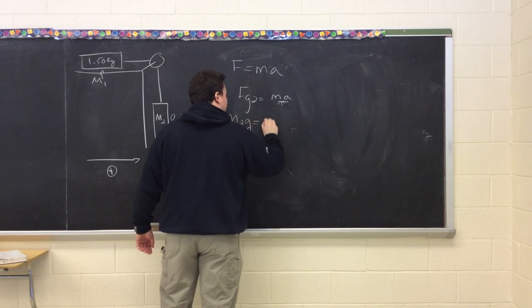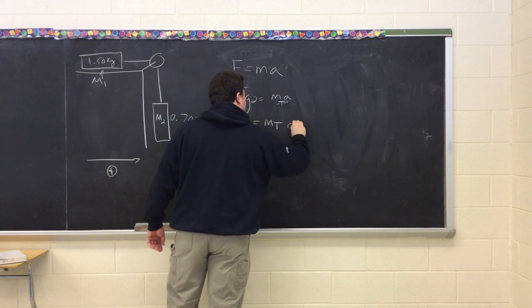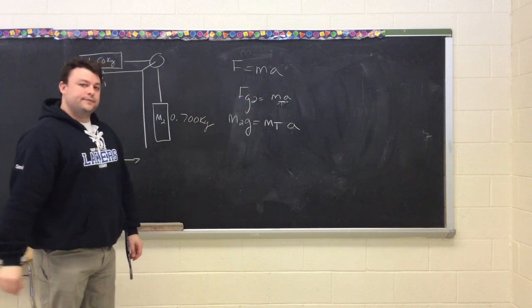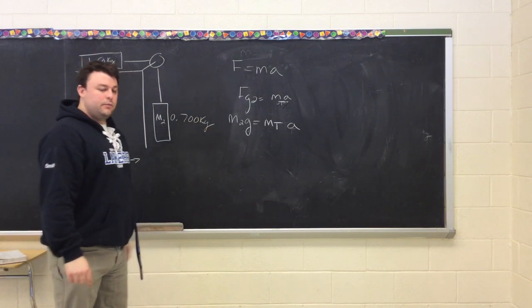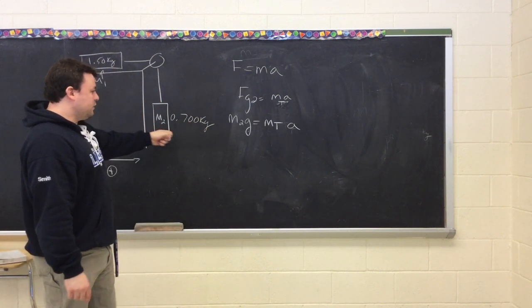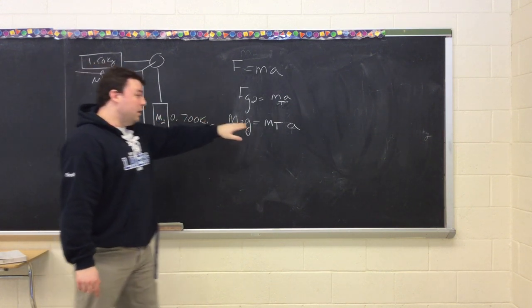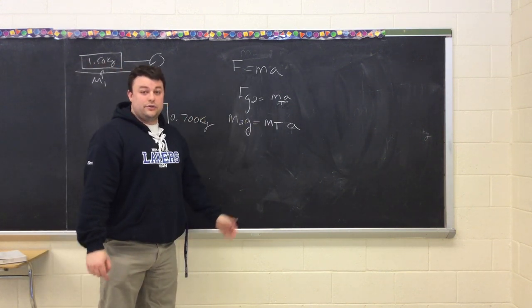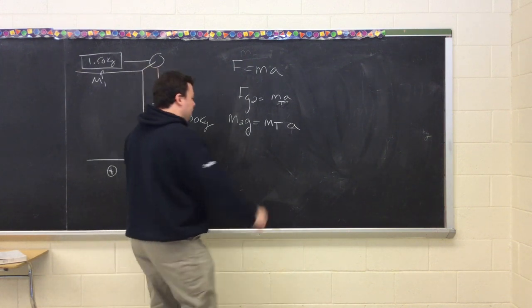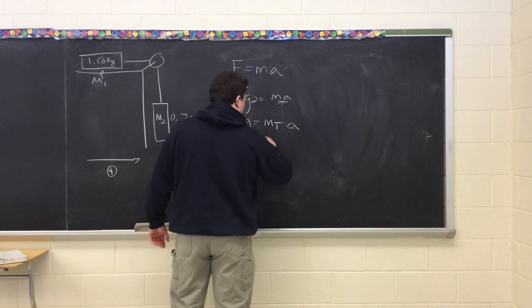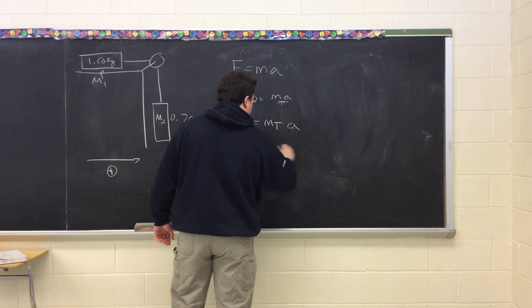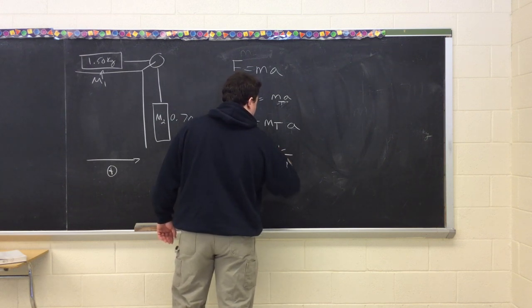So M2g is equal to mass total A. We know M2g because we know M2, we know g, and we know the mass total. So we can solve for A. A equals M2g all over Mt.